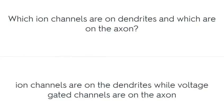Which ion channels are on dendrites and which are on the axon? Ligand-gated ion channels are on the dendrites, while voltage-gated channels are on the axon.